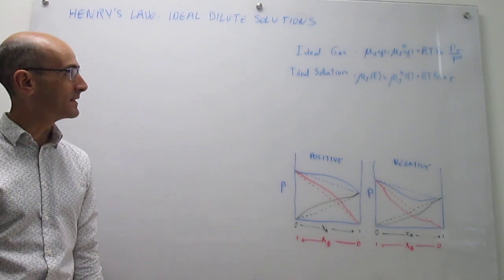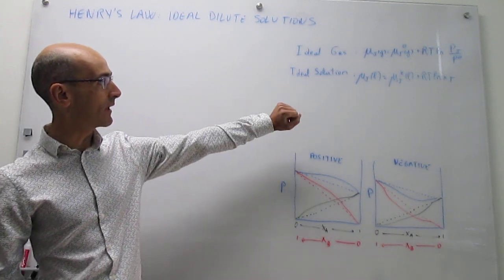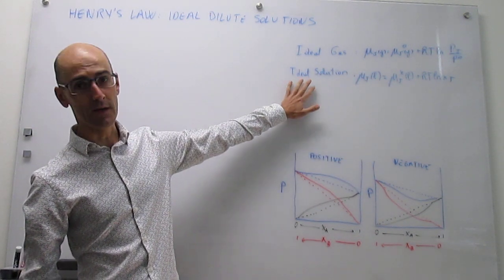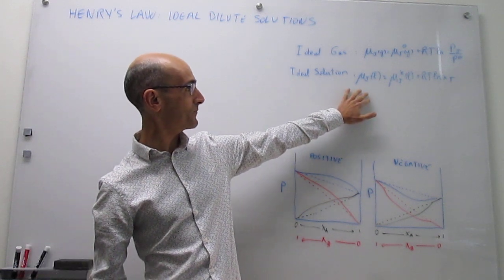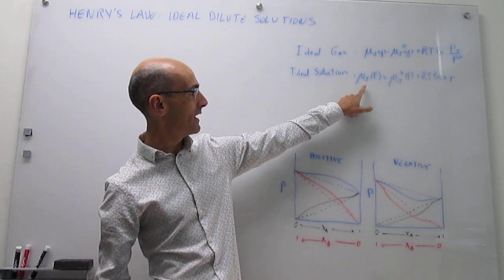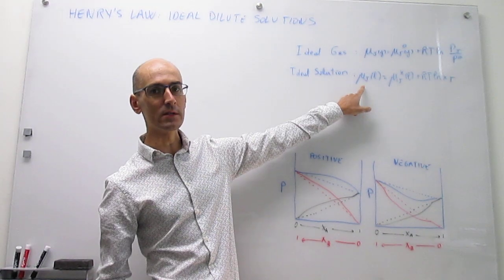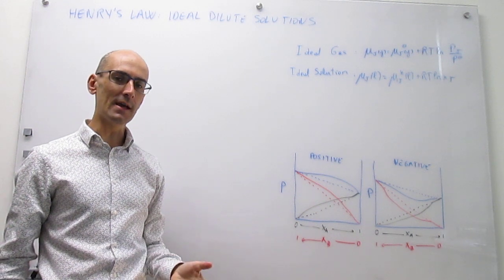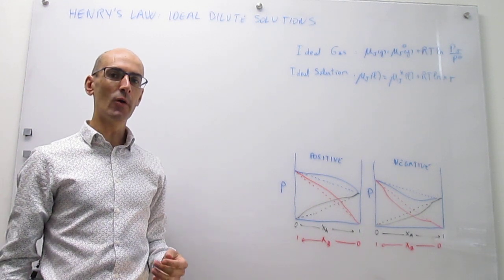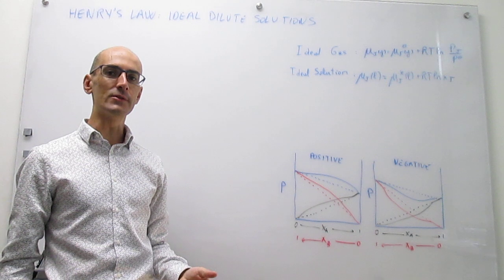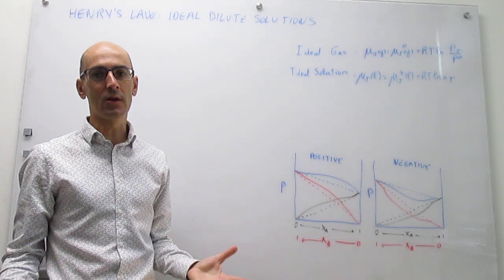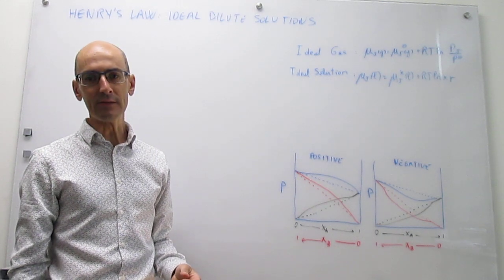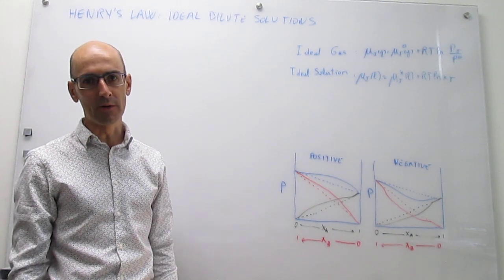For an ideal gas we can write how the chemical potential depends on pressure using that expression, and for a liquid ideal solution this is what applies. This requires that Raoult's law applies throughout the concentration range. But when you do binary mixtures of most solutions or most combinations of solvents, you actually get deviations from that ideal behavior of Raoult's law.